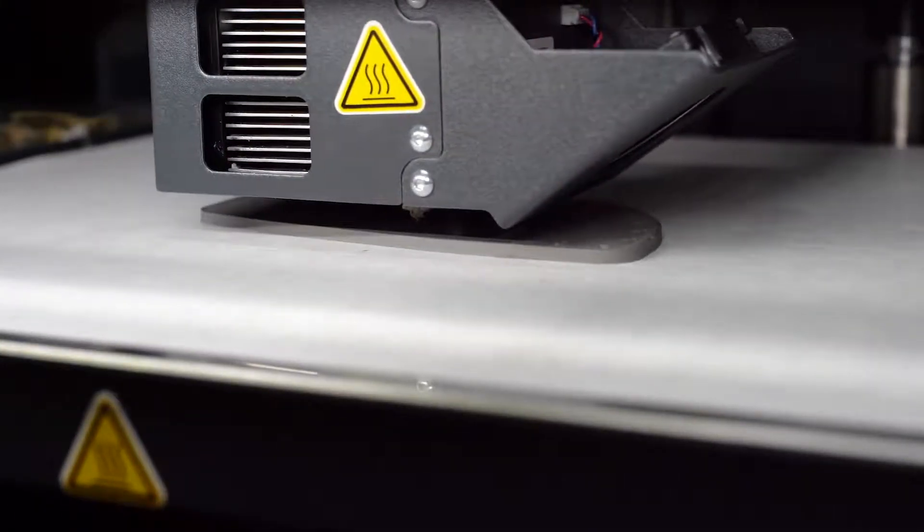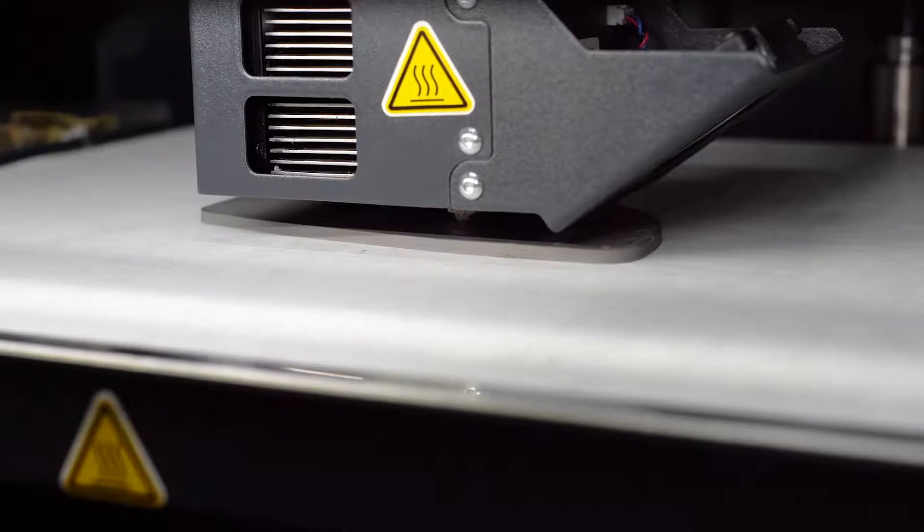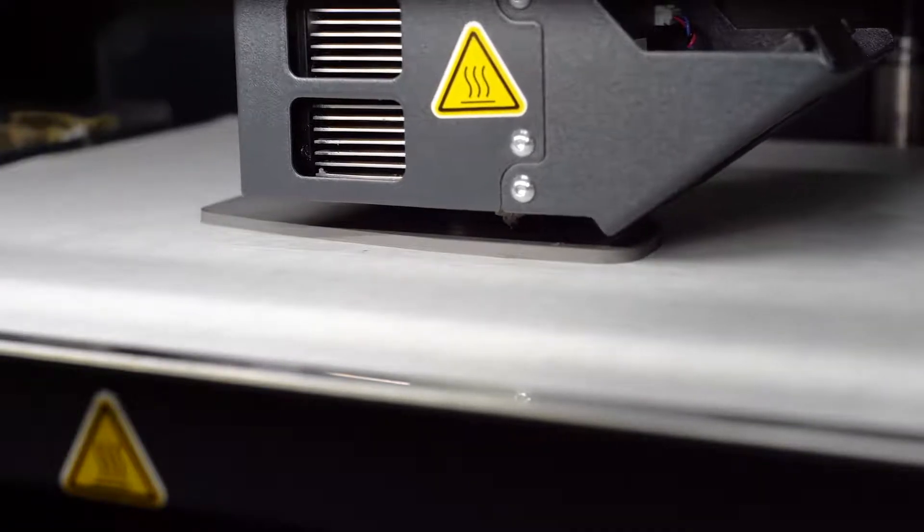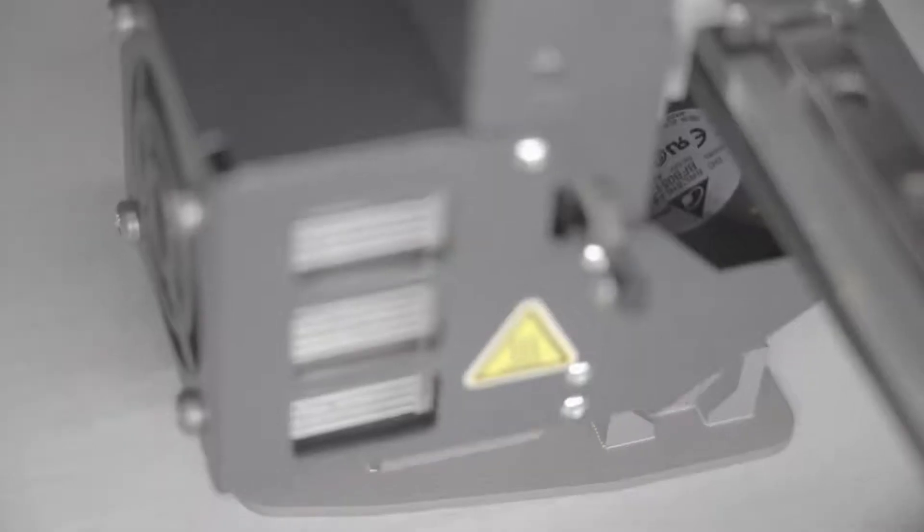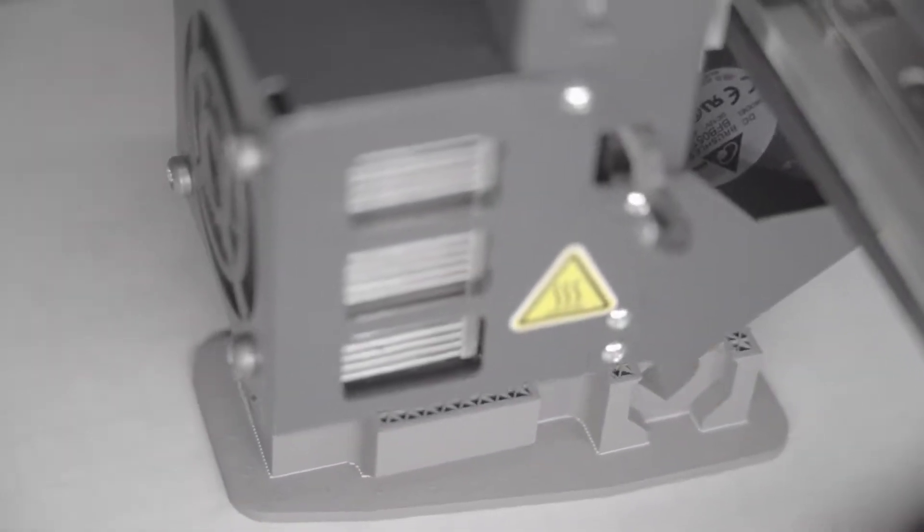The release material gets extruded as an interface between the part and its supports, so that once your part comes out of the furnace, it's easy to remove. Unlike other metal 3D printing systems, this process does not require loose metal powder, resulting in a safer and more cost-efficient workflow.